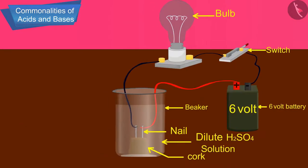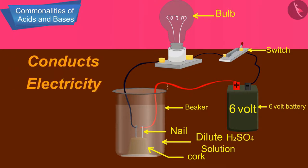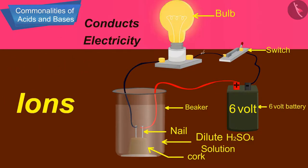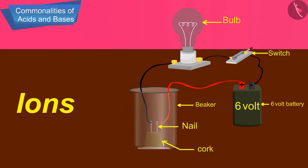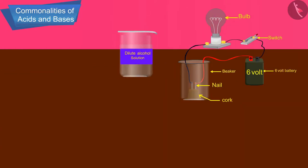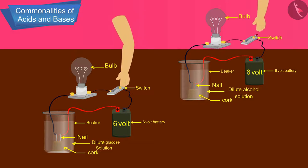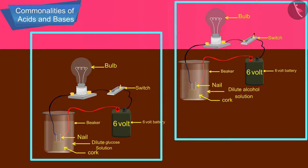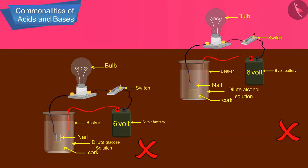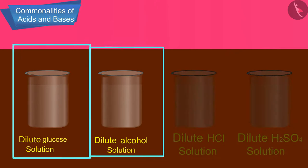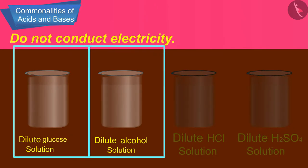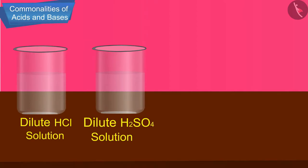The electric current is carried through the acidic solution by ions. Now repeat the experiment separately with glucose and alcohol solutions. What do you observe now? Does the bulb glow in all cases? The bulb does not glow in both these cases. This shows that glucose and alcohol solution do not conduct electricity.